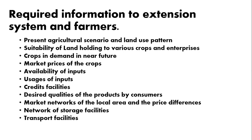Extension officers must understand market fluctuations and how prices of crops vary throughout the year. They must also know about the availability of inputs in the pre-production stage. Currently farmers preparing land and arranging supplies are finding that fertilizers, pesticides, and fungicides are not available in the market, and they will face huge problems if inputs — whether organic or inorganic — are not available at the correct time.